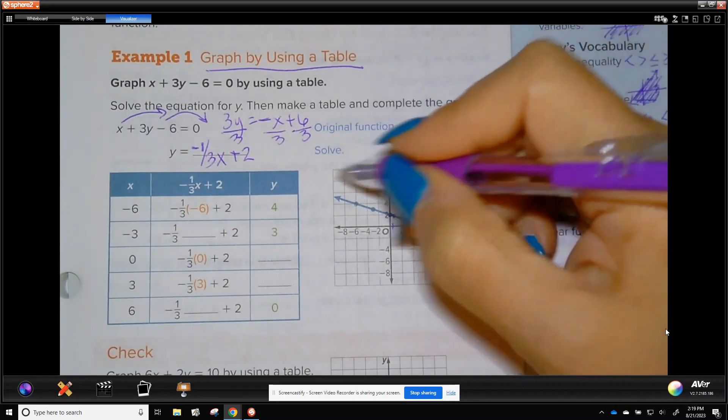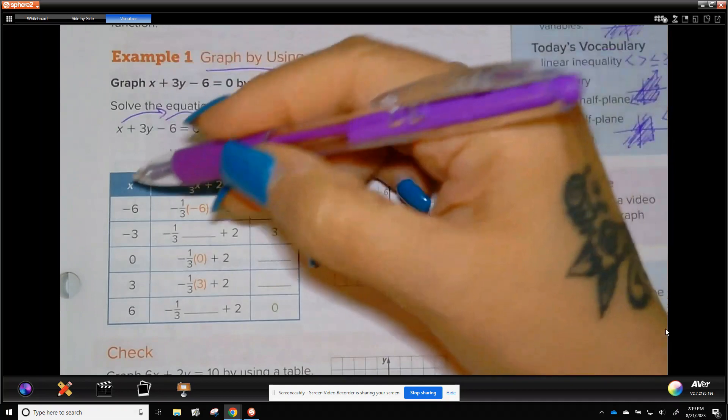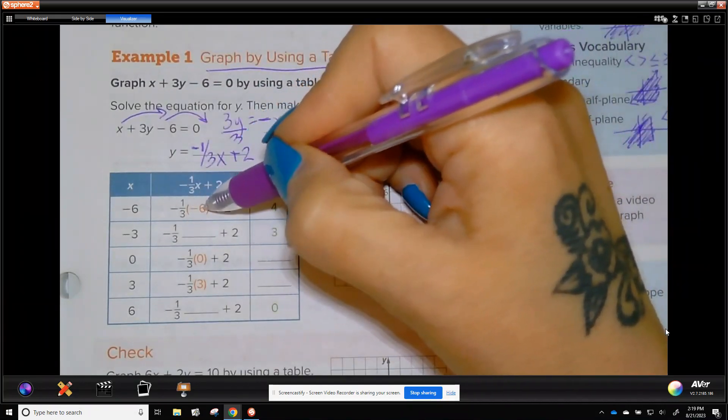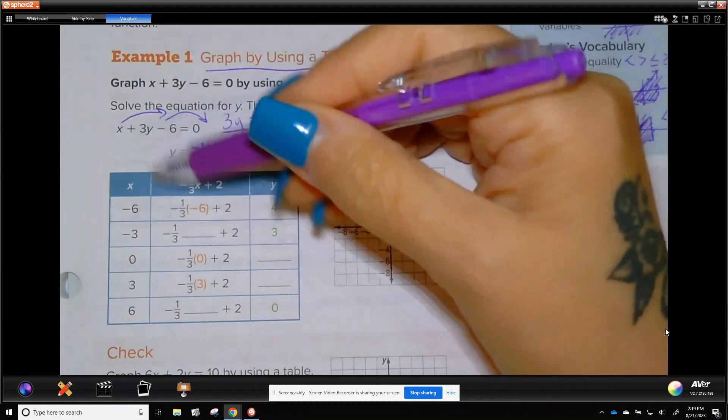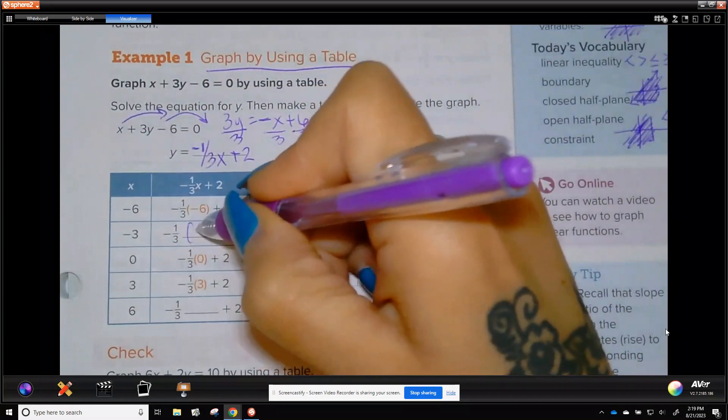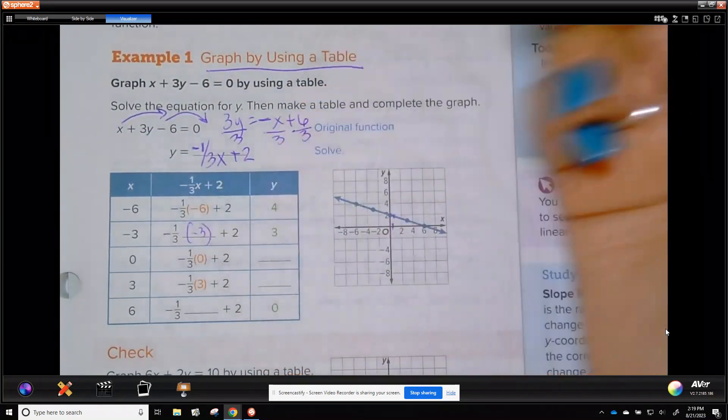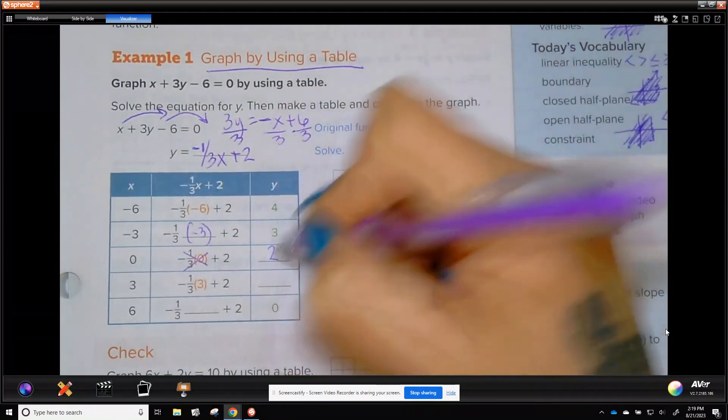Remember when it crosses the equals, that changes the sign. So then we're going to divide by 3 because we want 1y. And we get y equals negative 1 third, because there's 1 over 3, x plus 2. And they already have it graphed, but you could get these values from the line, or what they want you to do is plug in negative 6. One third of, negative one third of 6 is 2, 2 plus 2 is 4.